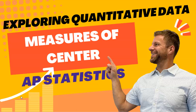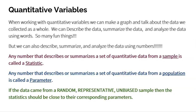So what is a distribution again? A distribution is what values your variable takes on and how often it takes on those values. We definitely want to make sure that when we're talking about the data, we focus on what the center could be. When working with quantitative variables, we can make a graph and talk about the data we collected as a whole. We can describe the data, summarize the data, analyze the data. We can also describe and summarize and analyze the data using numbers.